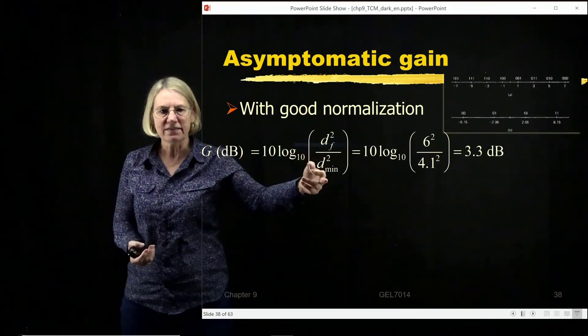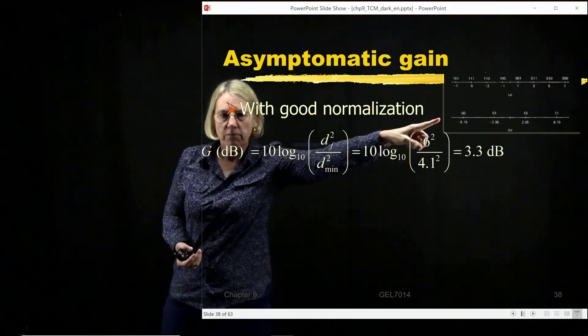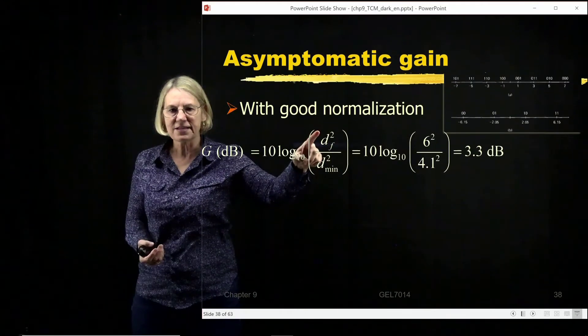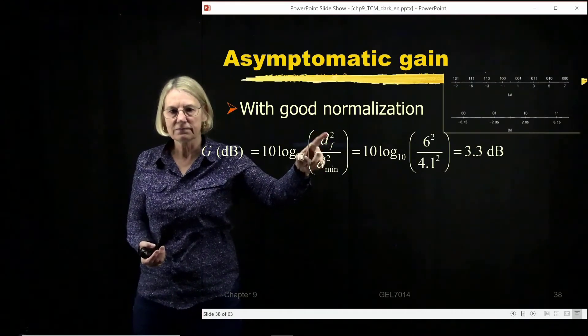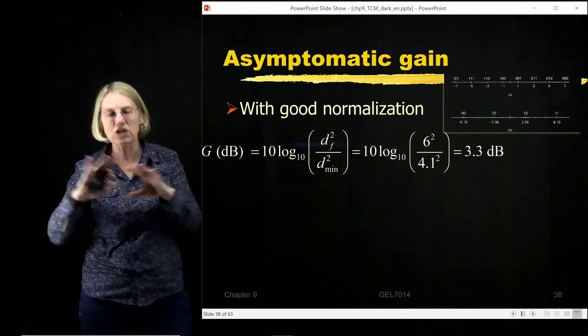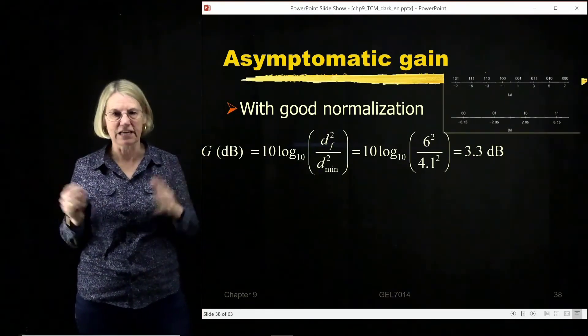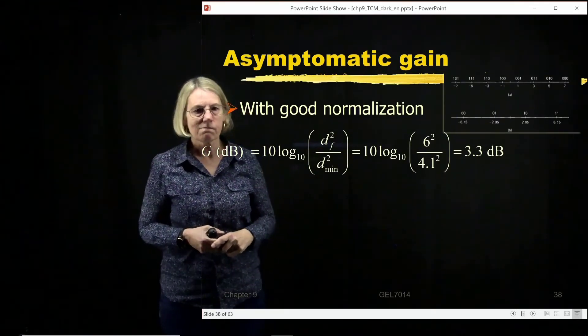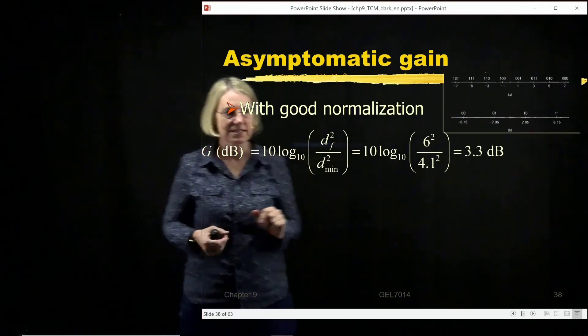And it would be, I used to be at this 4 PAM with no modulation separation. And now I'm at this separation, which is with the increase because of the trellis having increased this distance. And so the gain has the square of the distances.